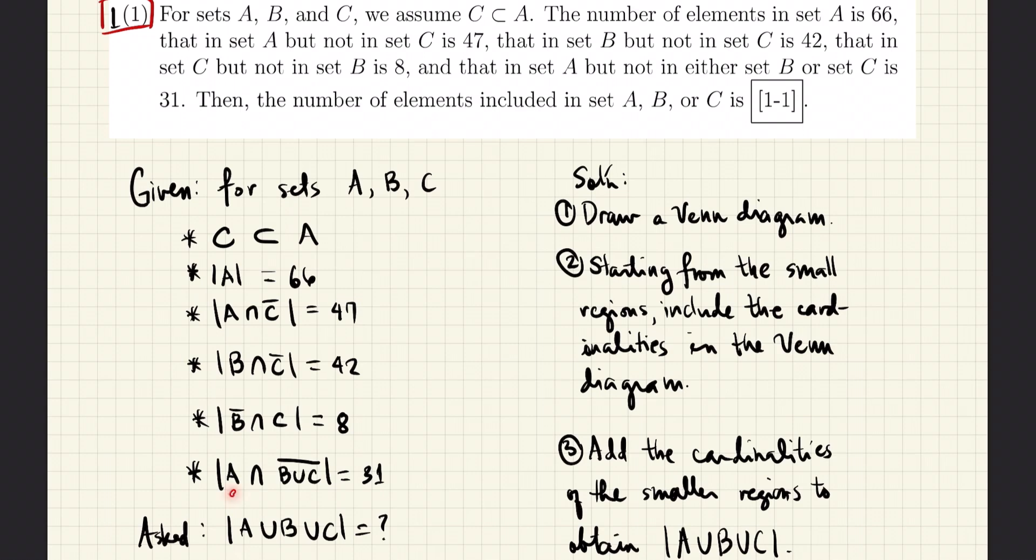For this last given, that is, the intersection of A and the complement of the union of B and C, and that is 31 according to the problem.